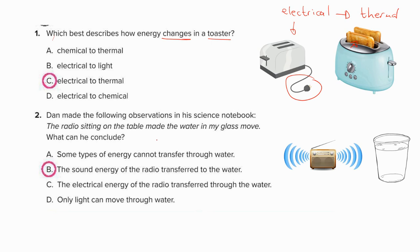In the second question, it says a radio sitting on a table made water move. What can we conclude? If the radio made the water move, that means the energy is transferred from the radio into the water. The energy there is moved from the radio into the water. So these vibrations will move.